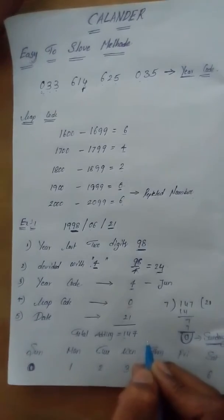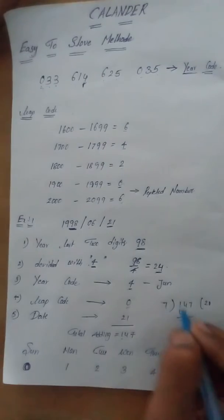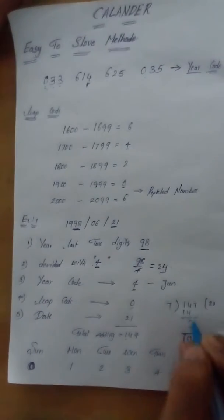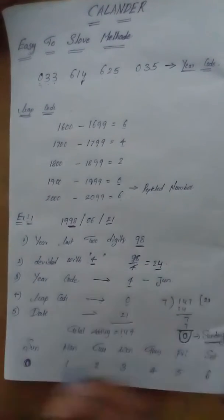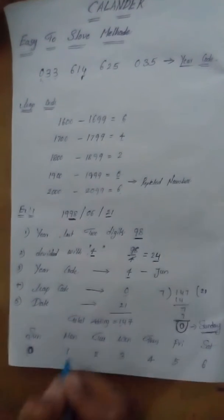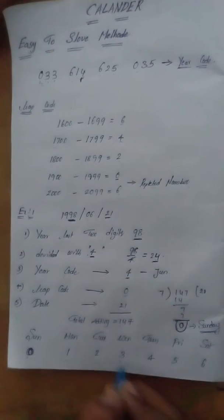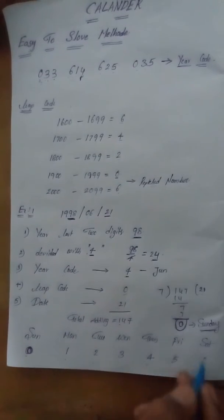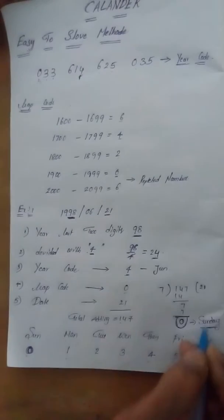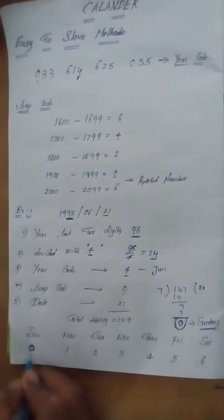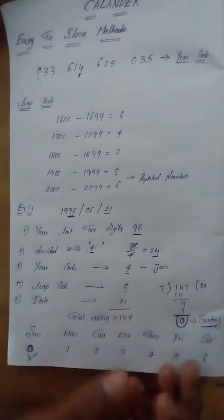The total is 147. Divide 147 by 7: that's 21 times with remainder 0. Now match to days: 0 is Sunday, 1 is Monday, 2 is Tuesday, 3 is Wednesday, 4 is Thursday, 5 is Friday, 6 is Saturday. So 0 equals Sunday. Easy to solve method!